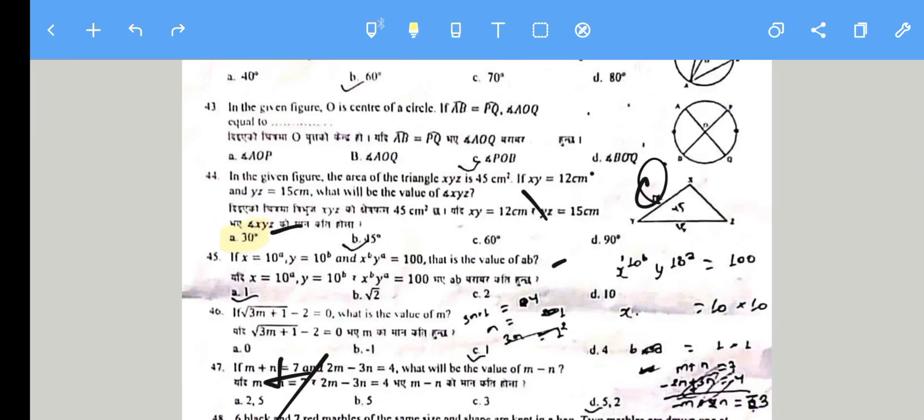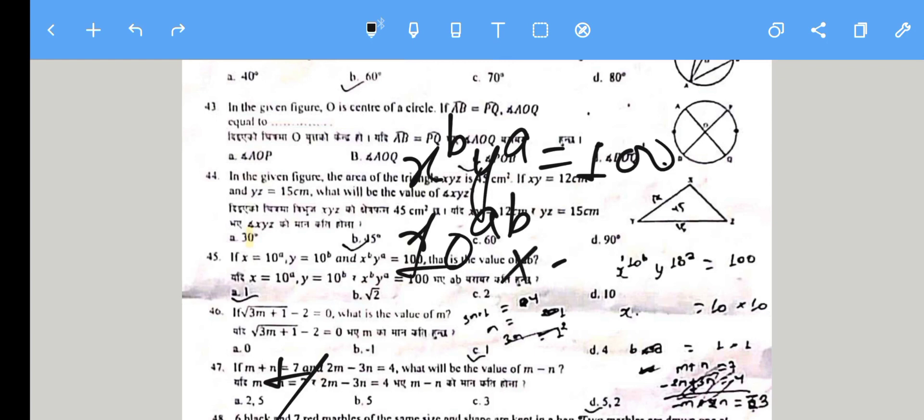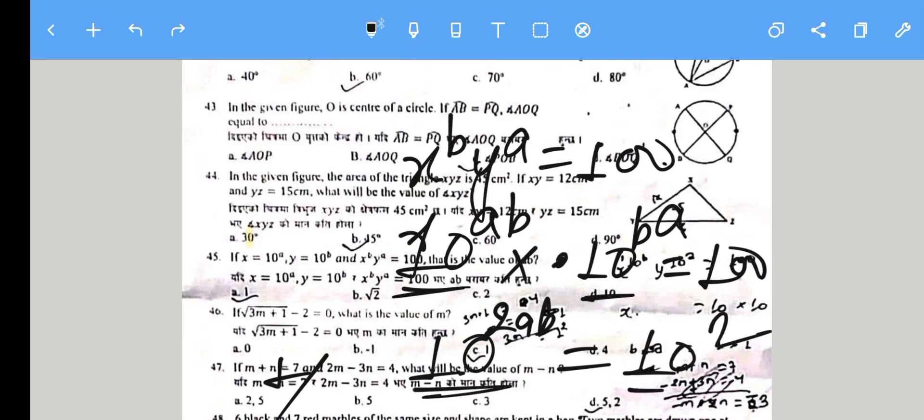Question 45: x = 10^a, y = 10^b, and x^b × y^a = 100. Since x^b = (10^a)^b = 10^ab and y^a = 10^ab, their product is 10^2ab = 100. Therefore 2ab = 2, so ab = 1.